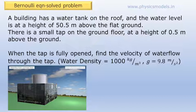We have to find out the velocity of the flow through the smaller orifice. In this particular problem, there is a water tank on the roof and there is a tap at the bottom.